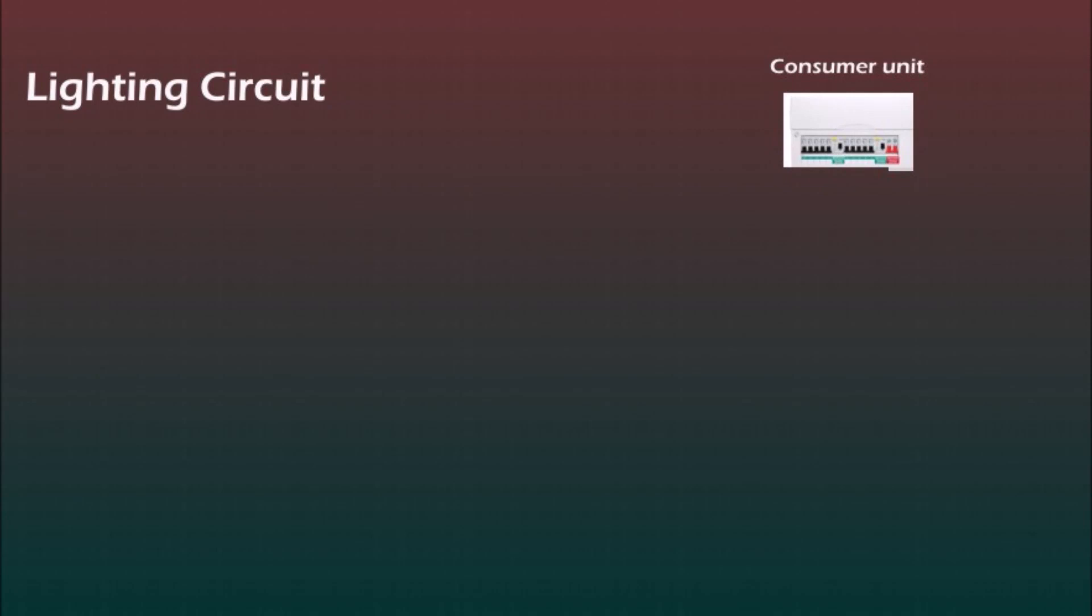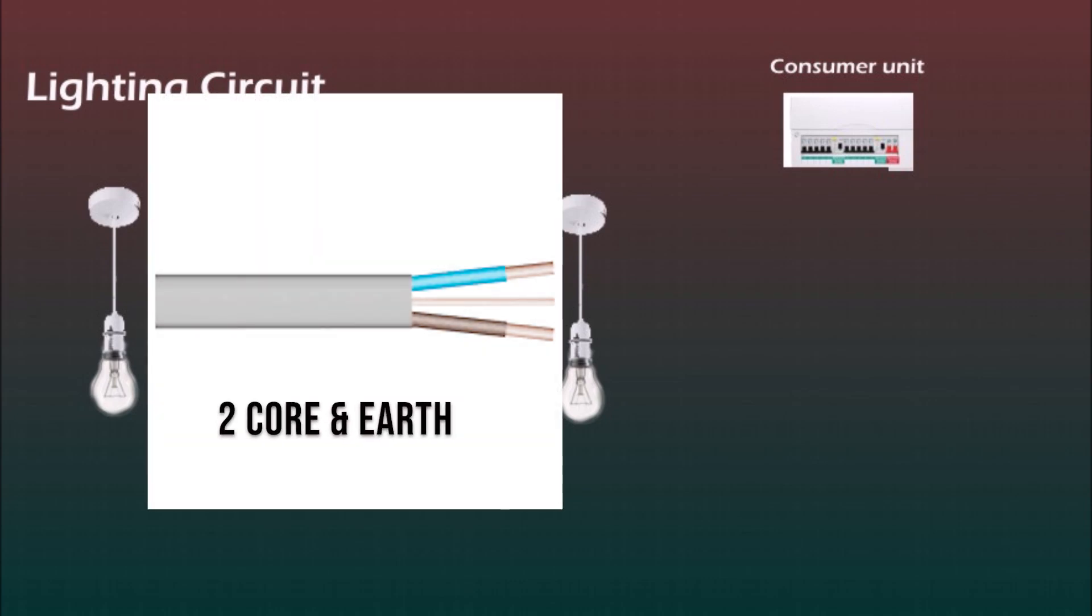Here you see a consumer unit on the right and in the middle three lamps with ceiling roses. This will be a lighting circuit with three lamps, each in a different room. For this circuit we're going to use a flat twin and earth cable with brown live wire and blue neutral wire.